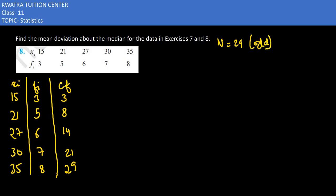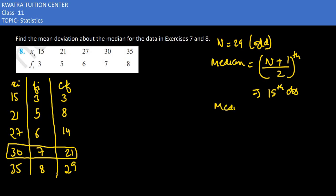So we use odd formula to find median. And what is the median odd formula? N plus 1 divided by 2th term. So here N is 29, 30 by 2, this means 15th observation. And 15th observation is 30. So what is median? It would be 30.